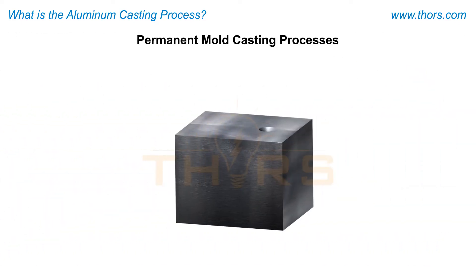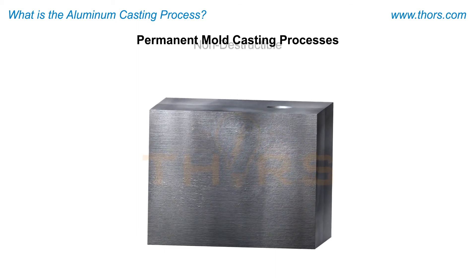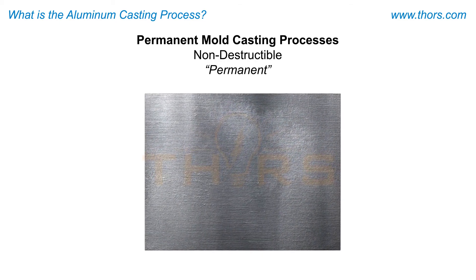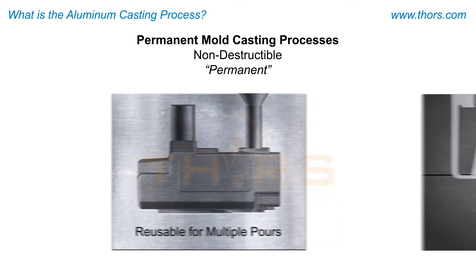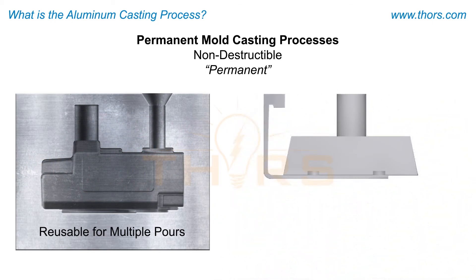Permanent mold casting processes are those that utilize non-destructible or permanent molds, typically made of steel or cast iron. These molds are reusable for multiple pours, contrasting with the traditional sand molds that are broken apart after each pour to free up the castings.